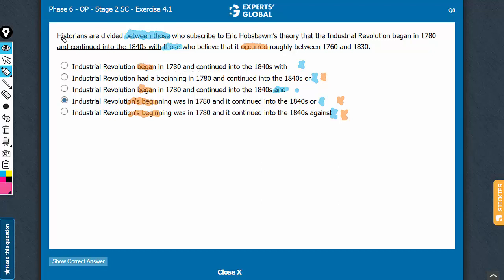The broad construction is historians are divided between those who subscribe to someone's theory that the industrial revolution began in 1780 and continued into the 1840s. These two answer choices are exactly the same from here to here, and the only difference is between with and and construction. This broad construction here, historians are divided between those who subscribe to something and those who believe that something else. The understanding of this broad construction is important.